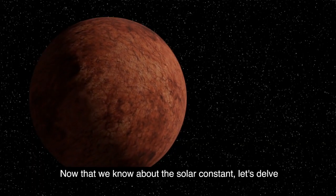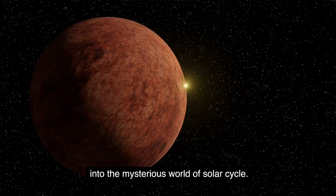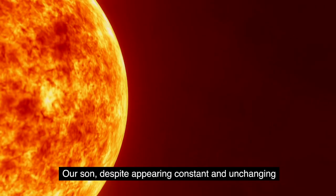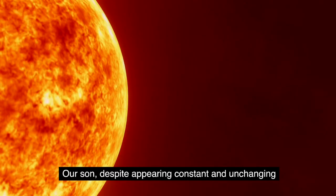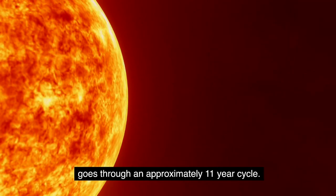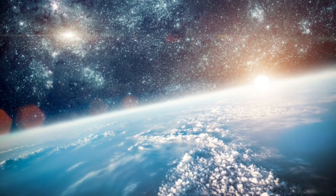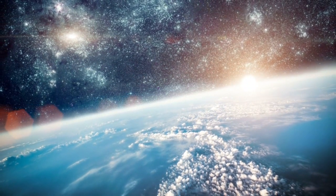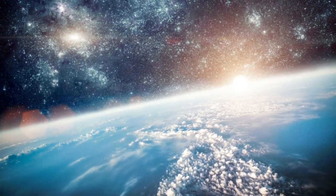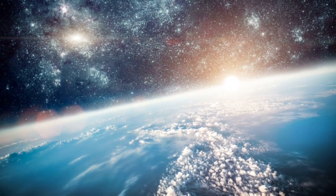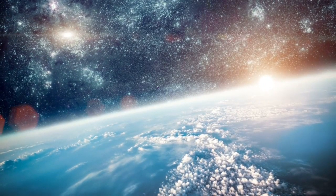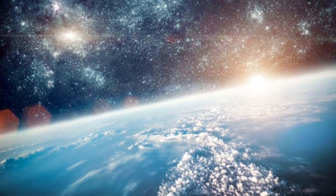Now that we know about the solar constant, let's delve into the mysterious world of solar cycles. Our sun, despite appearing constant and unchanging, goes through an approximately 11-year cycle. This cycle is marked by periods of increased solar activity, known as solar maximums, and periods of decreased activity, known as solar minimums. It's a rhythm that has been observed for centuries and provides an intriguing look into the dynamic nature of our sun.